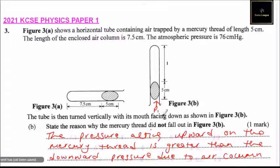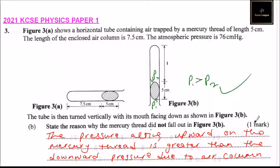So if we say this is P1 acting upwards and this is our P2 acting downwards, so P1 is greater than P2. So that's how you answer that and you'll be able to get that one mark.